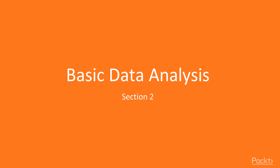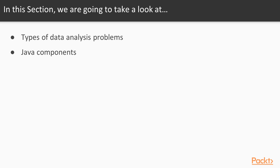In Section 2, we are going to be talking about basic data analysis with two main objectives. The first is to talk about the types of data analysis problems that we're likely to encounter in an average day, and how to use different techniques to solve those and understand what the problem actually is. Then we are going to talk about Java components, or what techniques you're going to use within the JDK to actually go about writing code to solve those problems.